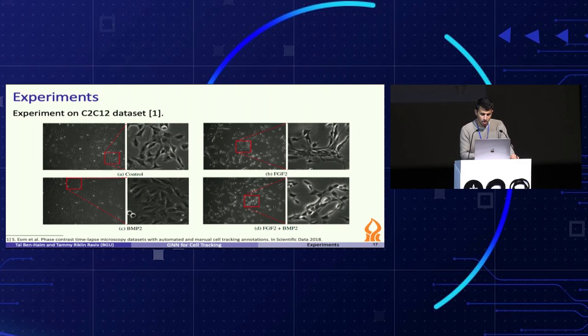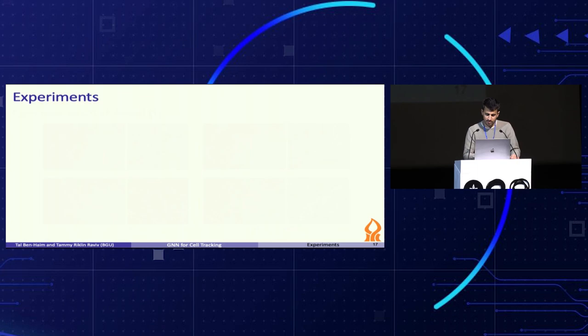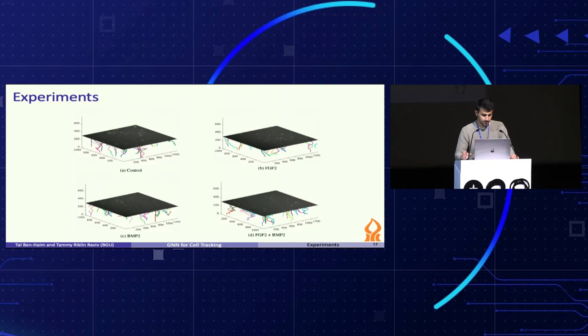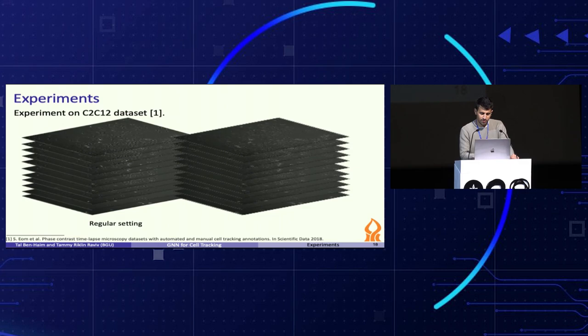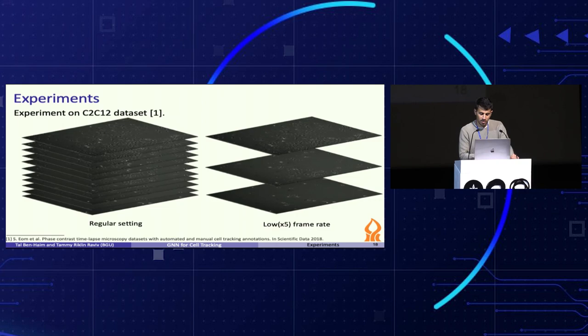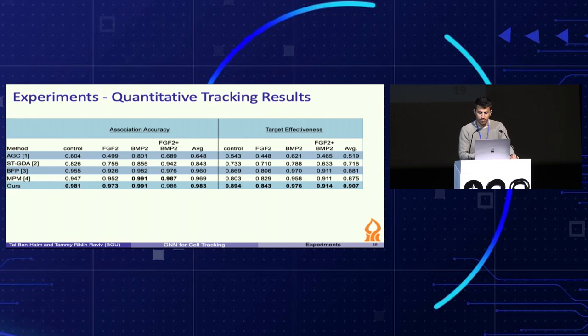We evaluate our method on several datasets. The first one is a very challenging open dataset that contains multiple sequences under four growth factor conditions. For this dataset, we evaluate results in two different settings: regular setting and low frame rate setting, where we render five times faster cell dynamics using sampling of every fifth frame. We measure performance using two metrics: association accuracy and target effectiveness. Association accuracy is a frame-by-frame accuracy measure defined by the ratio between the number of true positive associations and the total number of ground truth associations, similar to the IDF1 measure in multi-object tracking literature. Target effectiveness considers the entire path and quantifies the ratio of the cell path that matched the ground truth track.